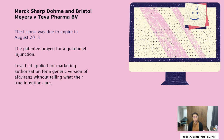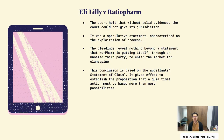In January 2012, that authorisation was granted. Canadian courts have been less likely to grant quia timet actions since they adopted a strict two-pronged test, holding that there are at least two necessary ingredients for such an action. Looking at Eli Lilly against Rantia Farm, the court held that without evidence of actual manufacture, sale, import, and others, the court could not exercise its jurisdiction, as the claim was a speculative statement characterised as the exploitation of process. This conclusion was based on the appellant's statement of claim, establishing the proposition that a quia timet action must be based on more than mere possibilities.